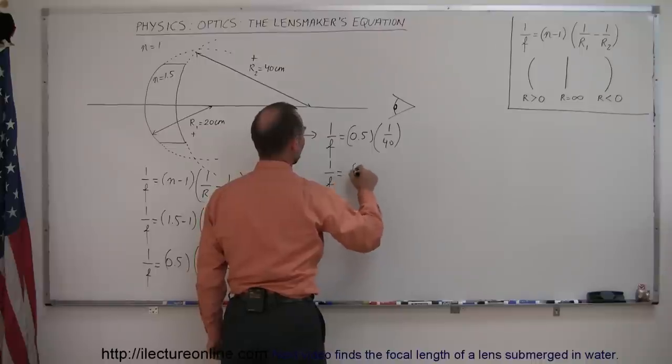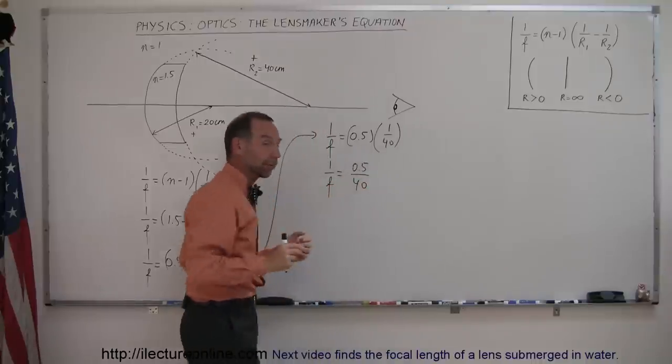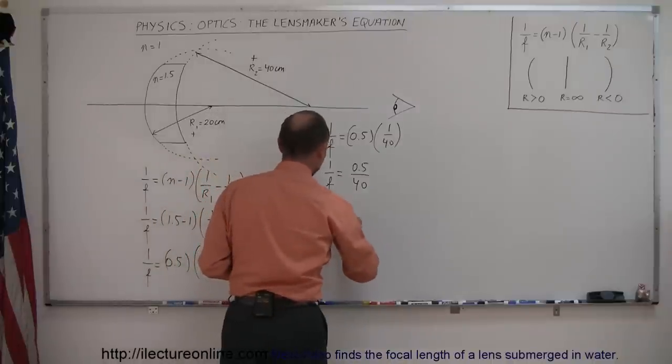We have 1 over f is equal to 0.5 over 40, now turning the equation around because we're looking for f, not 1 over f, so f is equal to 40 over 0.5,